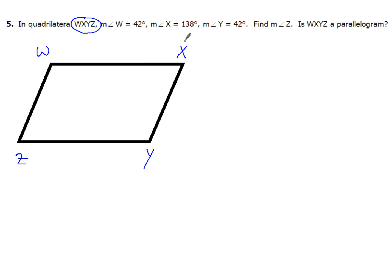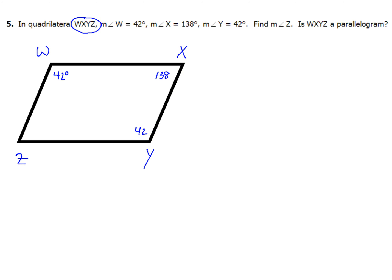We've got that information, then we're going to go ahead and plug in what we know: 42 degrees for W, 138 for X, and 42 for Y. We know this is a quadrilateral — so what do you know about the sum of the interior angles for a quadrilateral? You better know that they add up to 360.